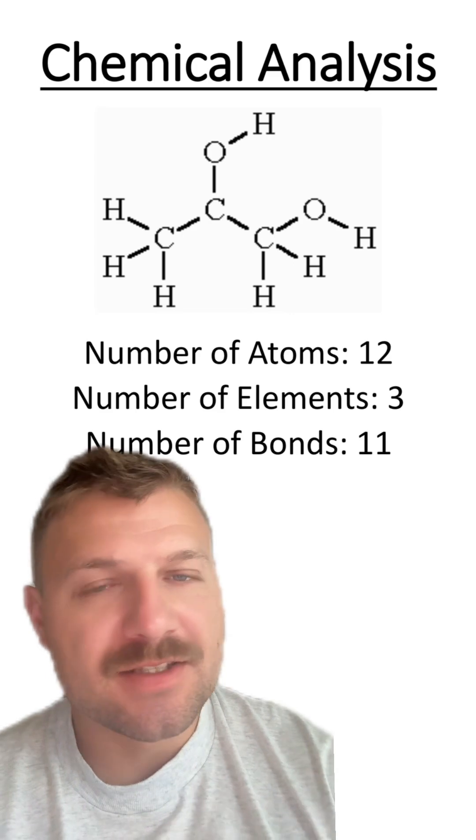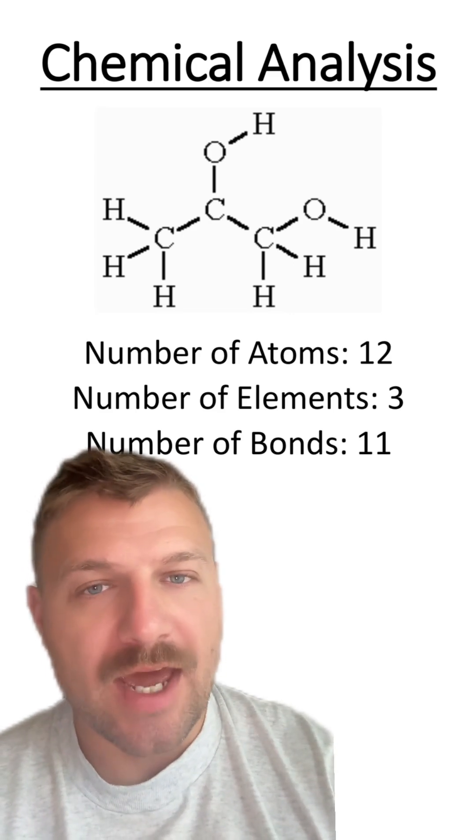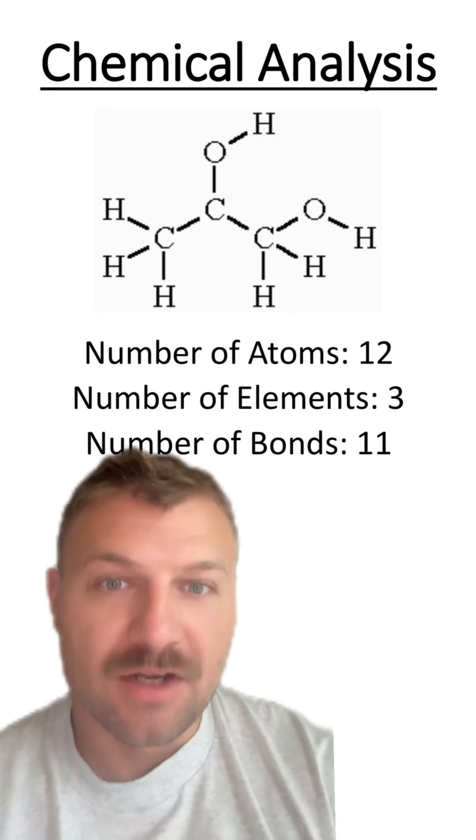There are three atoms of carbon, seven atoms of hydrogen, and two atoms of oxygen, which means there's three different elements.